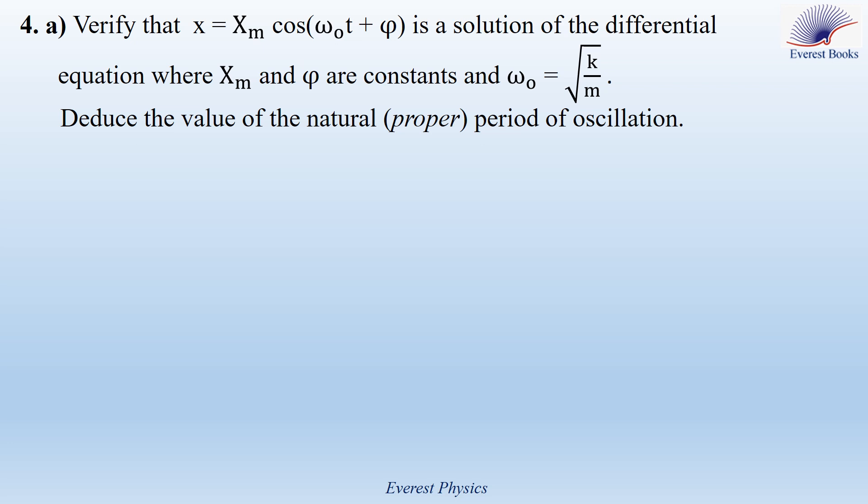Part 4: Verify that x equals xm cosine(ω₀t + φ) is a solution of the differential equation, where xm and φ are constants and ω₀ equals the square root of k/m, and then deduce the value of the natural period of oscillation. x equals xm cosine(ω₀t + φ), where xm is constant. The derivative of cosine(ω₀t + φ) is minus ω₀ sine(ω₀t + φ).